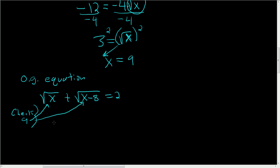So 9 is going to go where the x's are. So we get square root of 9 plus, let's see, 9 minus 8 is 1. So we get square root of 1 equals 2. So the square root of 9 is 3. So 3 plus 1 is equal to 2. So 4 is equal to 2.